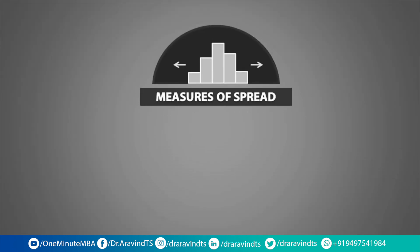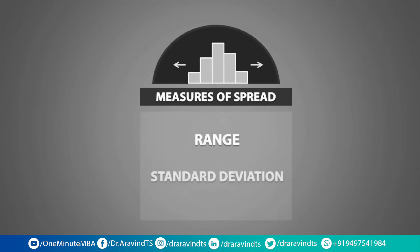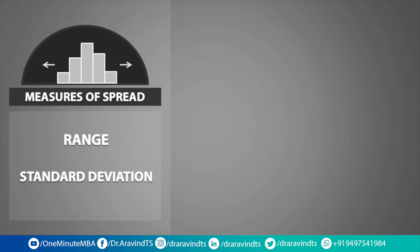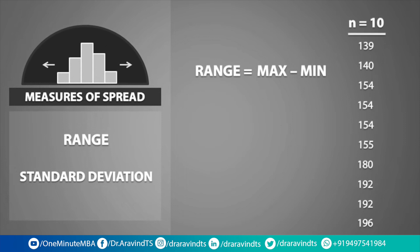Now let's talk about the measures of spread, which includes the range and standard deviation. Both of these values measure spread in a different way. The range is simply the maximum minus the minimum, so it tells us how much room a distribution takes. In this data set, the range is equal to the largest number, which is 196, minus the smallest number, which is 139. As a result, the range is equal to 57.